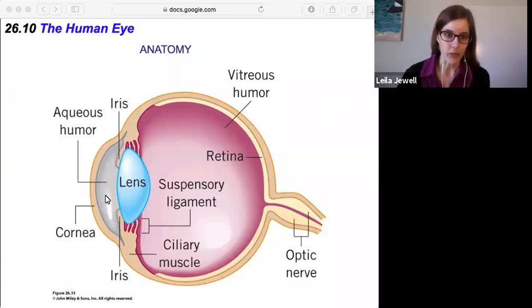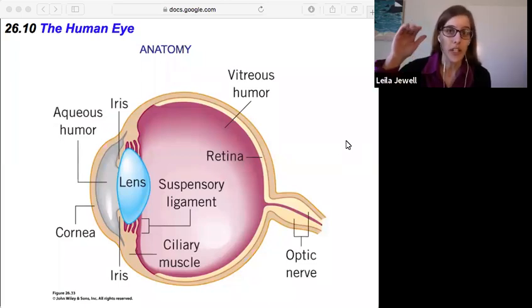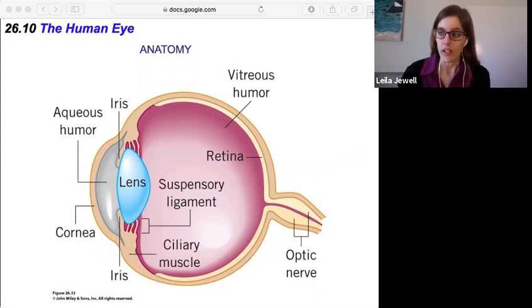So cornea, the aqueous humor, the lens, and then this vitreous humor, these all have slightly different indices of refraction that cause the light to bend. And so that is a big part of how this all works.